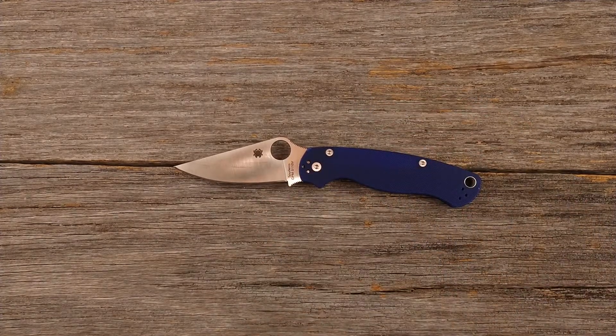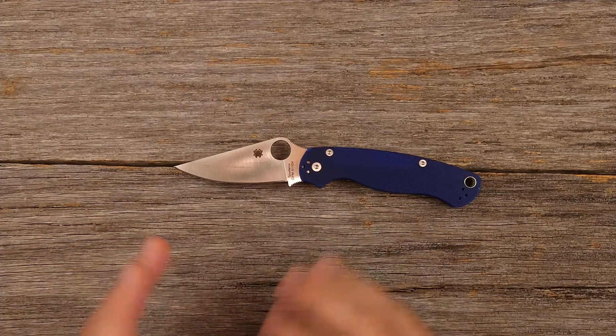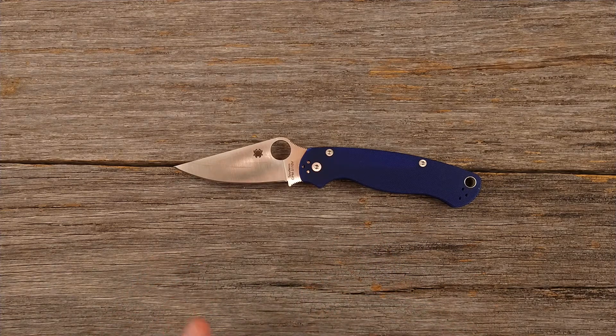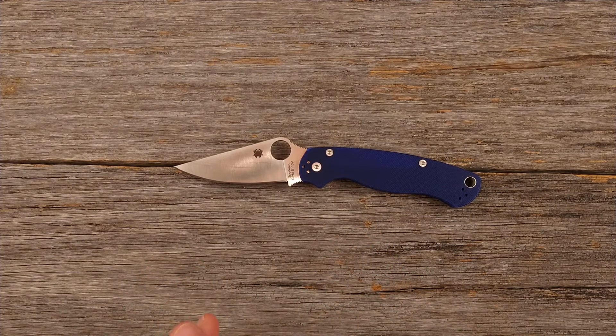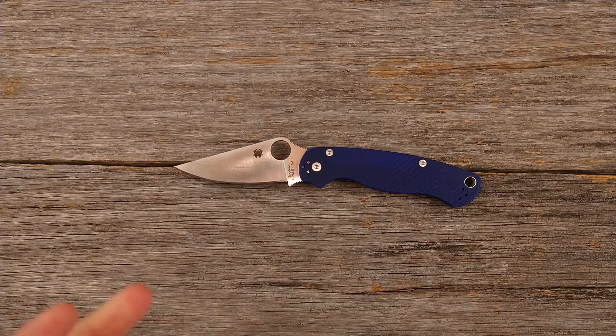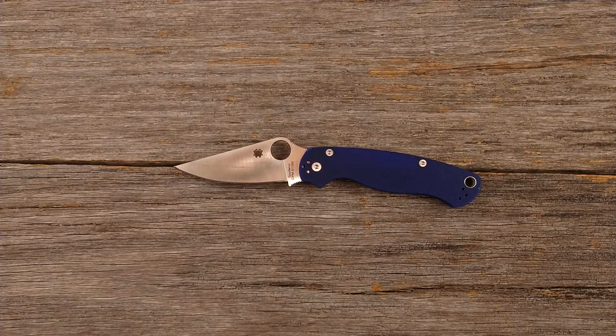So with blades, you basically have kind of four qualities you look at in a knife steel. You're looking for how long it'll hold an edge, its wear resistance, how easily it'll take an edge, how easy it is to sharpen. You're also going to be looking for toughness, which is the opposite of like brittleness.